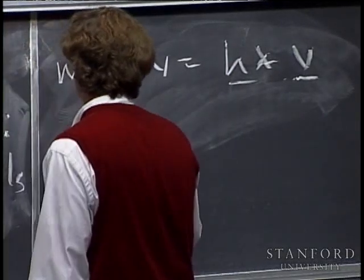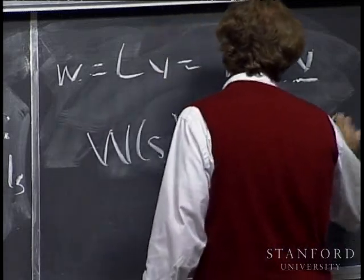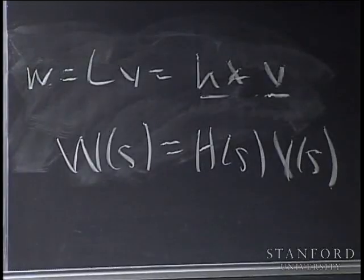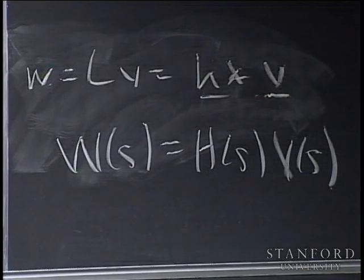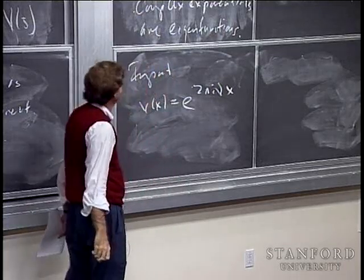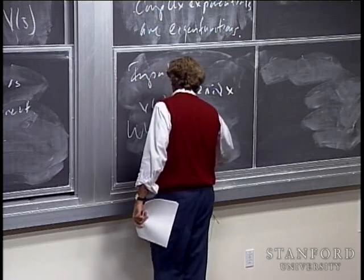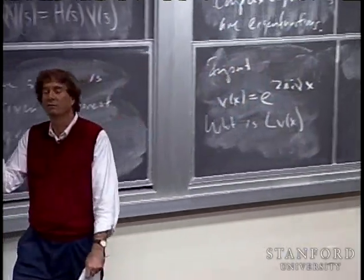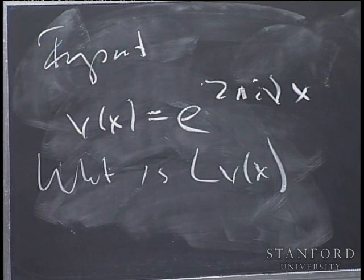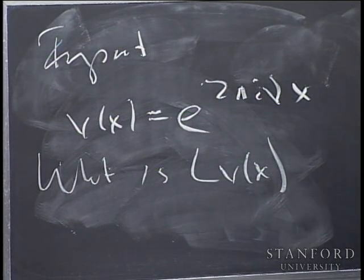The complex exponentials are eigenfunctions, so this equals one-half times [h(ν)·e^(2πi·ν·x) plus h(−ν)·e^(−2πi·ν·x)]. And now you're stuck — unless you have additional assumptions, you can't combine these terms. You have h(ν) and h(−ν), and without further assumptions they don't have anything to do with each other. So it's not an eigenfunction without further assumptions.